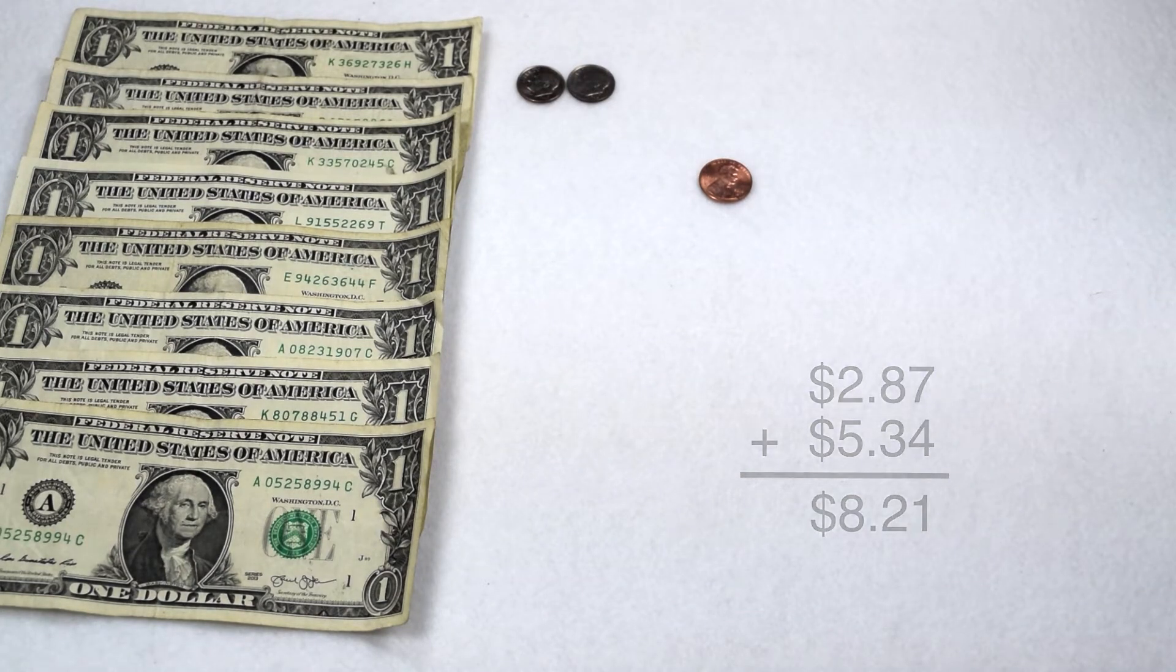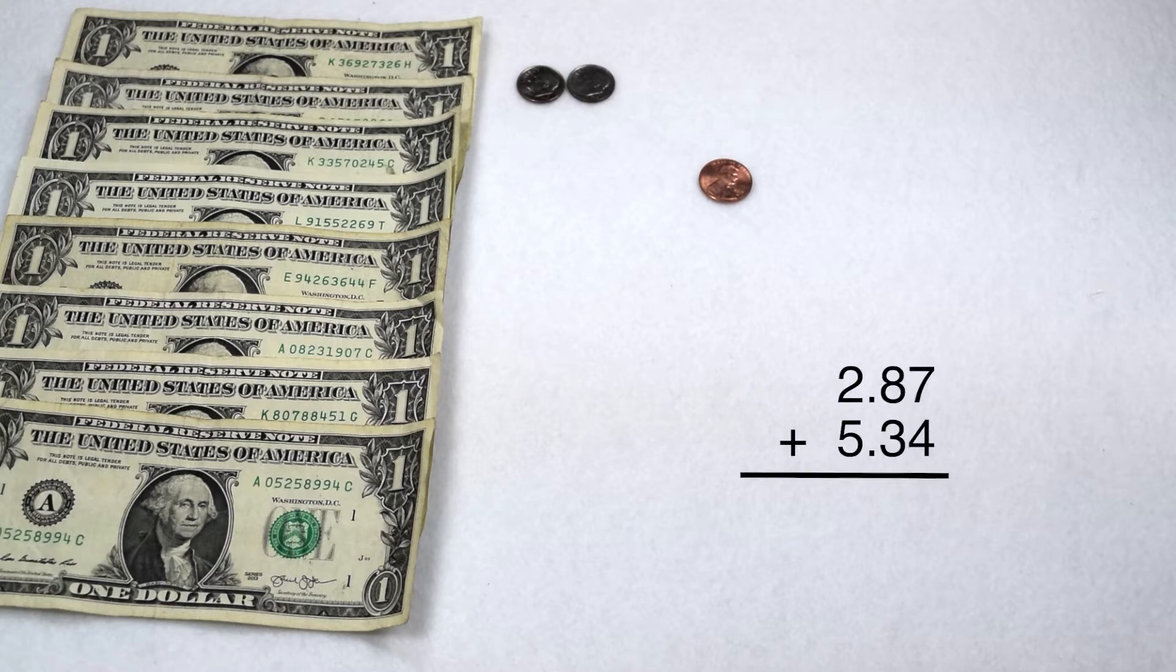The same could be done if I just added my decimals, 2 and 87 hundredths plus 5 and 34 hundredths. Line up my place values, and I can add my hundredths together. 7 plus 4 gives me 11. Put down my first one in the hundredth spot, carry my second one to the tenth spot. In the tenth spot, 8 plus 3 is 11, plus my carried one gives me 12. Put the 2 down in my tenth spot, and carry my 1 to the whole numbers. 5 plus 2 is 7, plus my carried one is 8. So again, I come out with 8 and 21 hundredths.